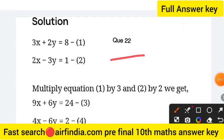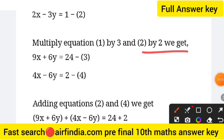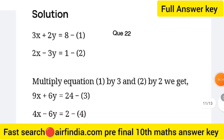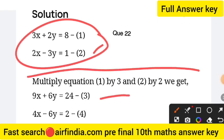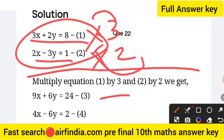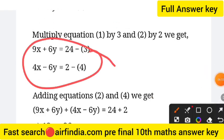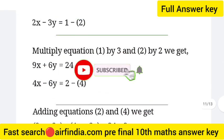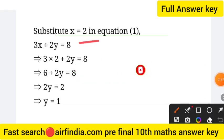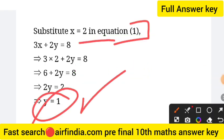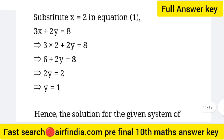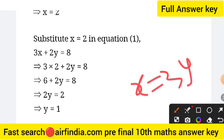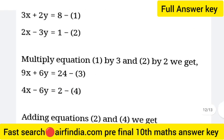Question 22: equations are 3x plus 2y equals 8 and 2x minus 3y equals 1. Multiply equation 1 by 3 and equation 2 by 2. After multiplication, add equations 3 and 4. The value of x equals 2. Substitute x equals 2 into equation 1 and the value of y comes out as 1. Hence the solution of the given system is x equals 2 and y equals 1.